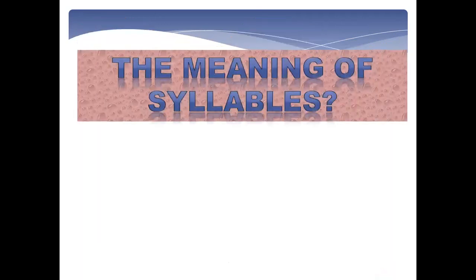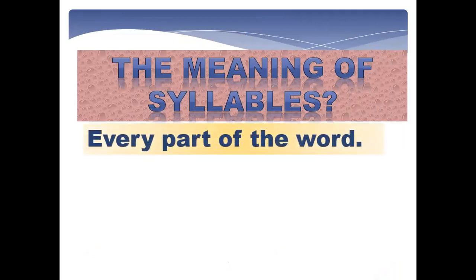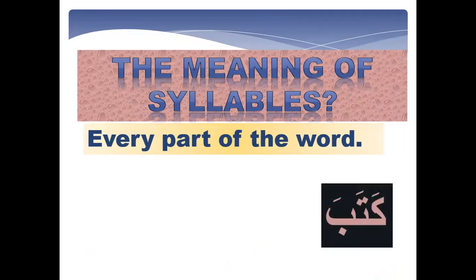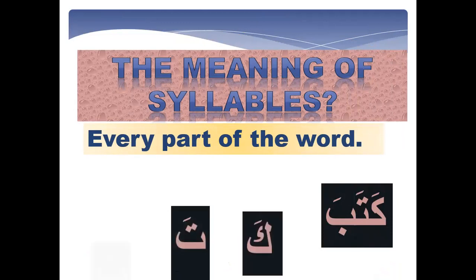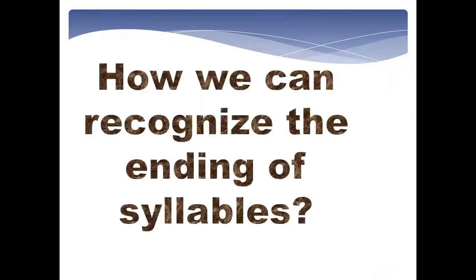Let's start with the meaning of syllables. A syllable means every part of the word. For example, the word 'kataba' — if you cut this word into syllables, it will be: ka-ta-ba. Three syllables.